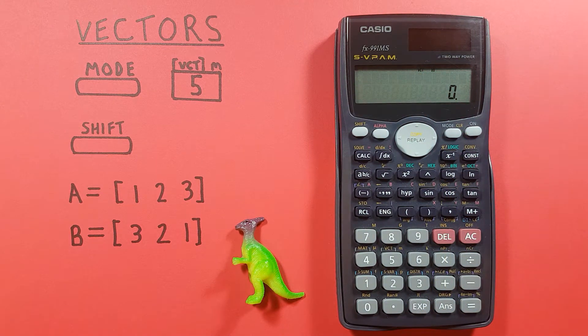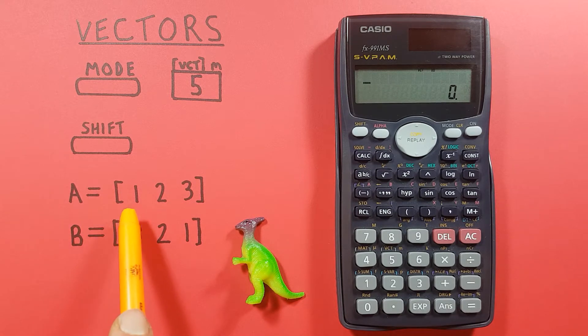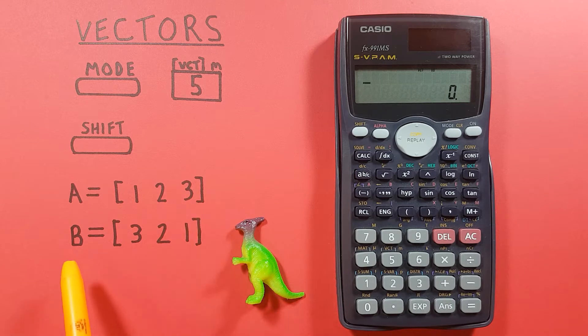We can now enter our vectors that we want to use. For these examples we'll use this A vector of [1, 2, 3] and our B vector of [3, 2, 1], both of which are three dimensional vectors.